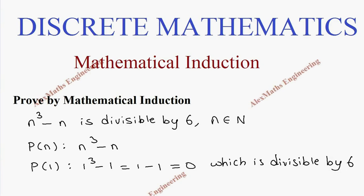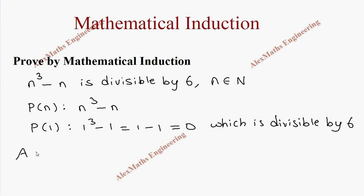Now assume P(k) is true. So P(k) expression is k³ - k. Since it is divisible by 6, it should have a multiple of 6, so we can take some 6 into some constant d.